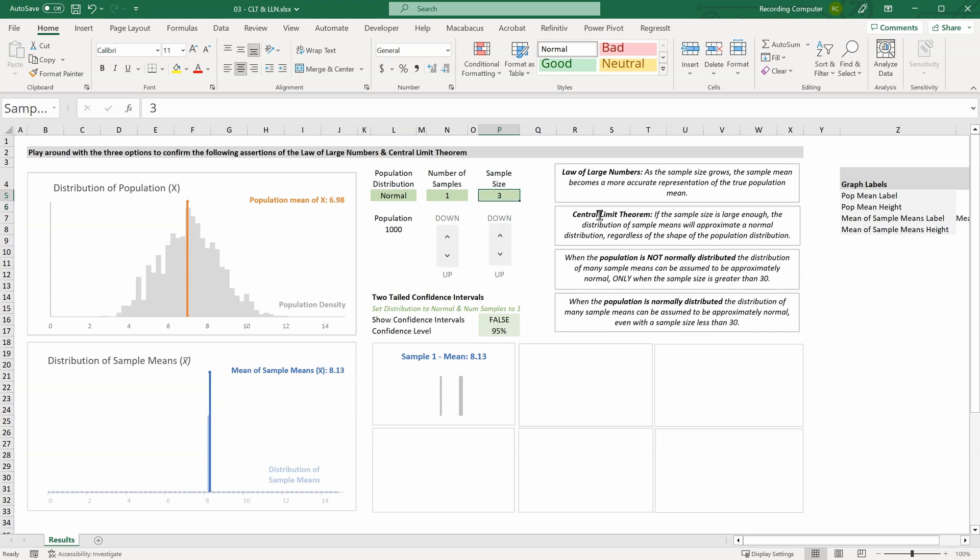So let's increase our sample size to 10. And we can see by comparing these two charts, our mean of sample means is becoming closer to our population mean. And if we increase our sample size to 30, it becomes a bit closer again. And if we increase it to a sample size of 100 and a sample size of 500. As our sample size increases, our sample mean is becoming closer and closer to our population mean.